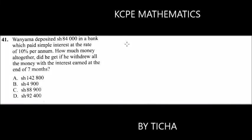Question number 41: Wanyama deposited 84,000 shillings in a bank which paid simple interest at the rate of 10% per annum. How much money altogether did he get if he withdrew all the money with the interest at the end of seven months? The method, the formula for finding simple interest is...